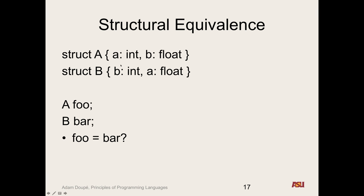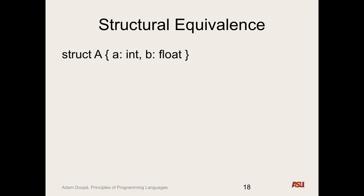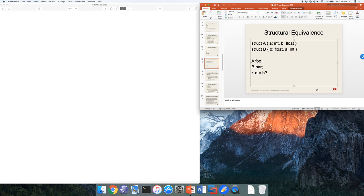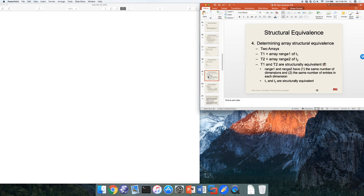The important thing is that the field name doesn't matter — only the order of types. If we have struct A where the first field is int and second is float, and struct B where the first field is float and second is int, even though both structs contain an int and a float, the order is different under structural equivalence, so foo and bar would not be structurally equivalent. The order in structural equivalence is what matters.